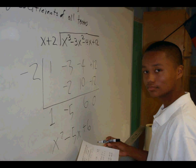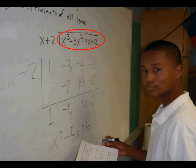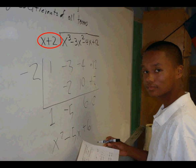And here's a picture of Alex after having completed this problem. Alex took this third degree polynomial x cubed minus 3x squared minus 4x plus 12 and divided it by this binomial x plus 2.